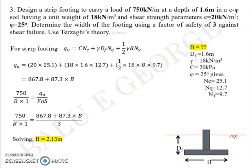You might notice a question I've marked as an assignment: in Problems 1 and 2, we used q_nu divided by the factor of safety to get q_ns, but in Problem 3 we used q_u directly divided by the factor of safety rather than q_nu. I'd like you to think about why that is and let me know.